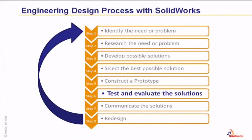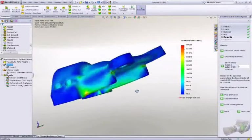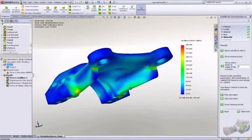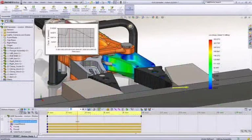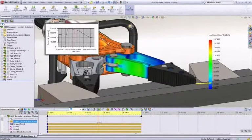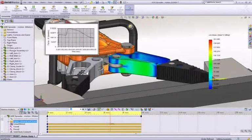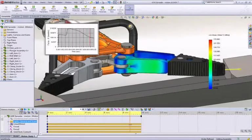Step 6 is to test and evaluate the solutions. At this stage, you'll test to see if your solution meets the design requirements and if any changes are necessary. This is most commonly done through simulations and motion analysis. SOLIDWORKS provides many tools to help you test your products for flaws and deficiencies. If it's feasible, you should then conduct real-world testing because it can reveal issues that simulation may have overlooked.